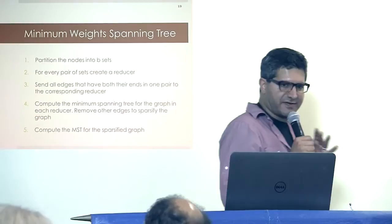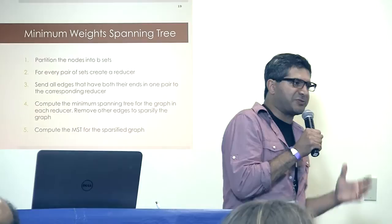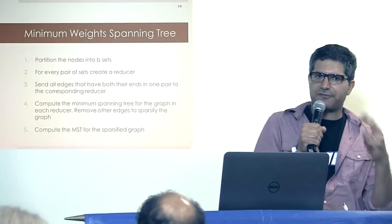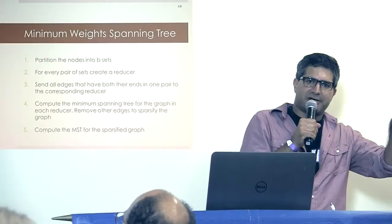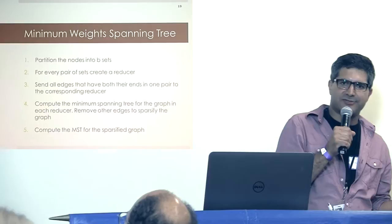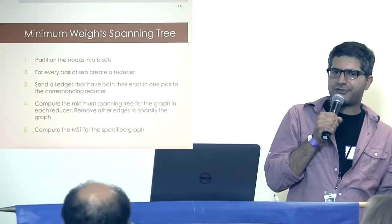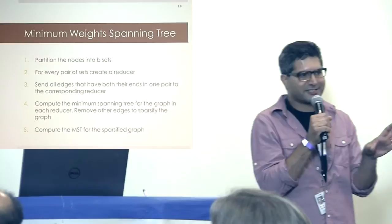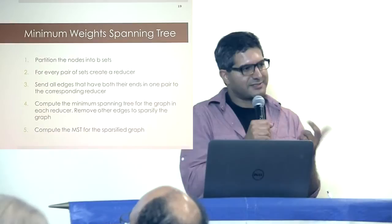Another good example is minimum weight spanning tree. Suppose you have a dense graph and you want to find the minimum weight spanning tree. You could again partition the nodes into B buckets, create a bucket for every pair of sets, send all edges in that pair to the corresponding bucket, run minimum spanning tree on that bucket, remove edges now in the spanning tree — basically sparsifying the graph. Sparsification is a known trick. Then partition, fit in memory, run minimum weight spanning tree, sparsify, and repeat.